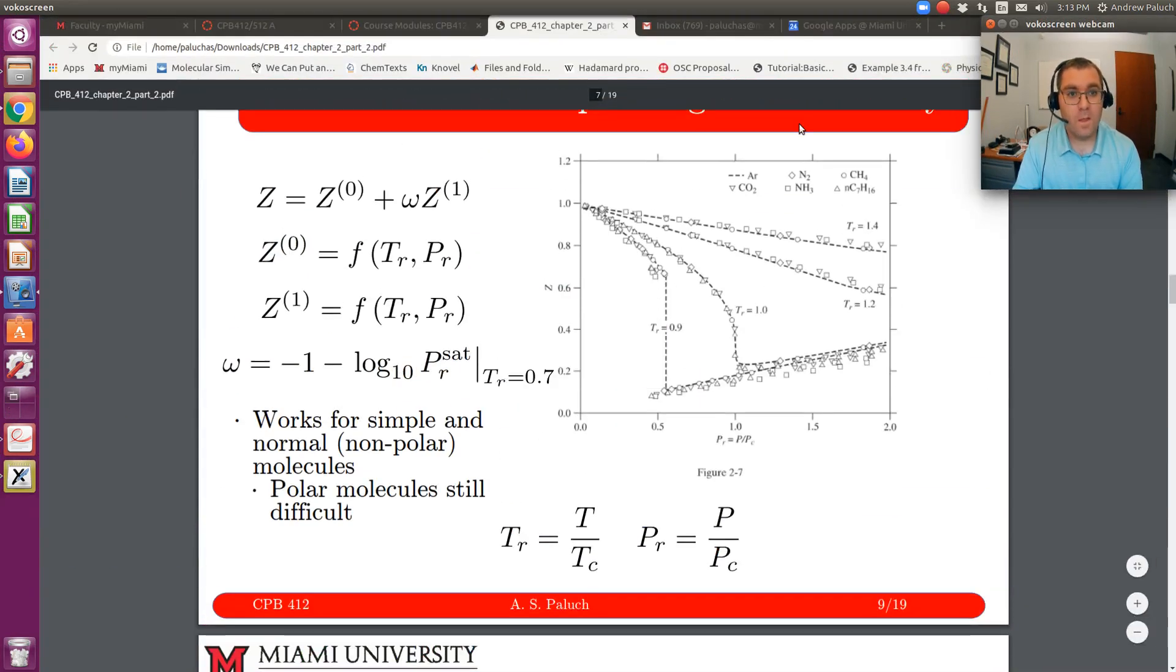So in terms of calculating eccentric factor, so this is slide 9 from our second set of notes for chapter 2. And here, we provide the definition of omega eccentric factor. So omega is defined as negative 1 minus log base 10, reduced saturation pressure at a reduced temperature of 0.7.